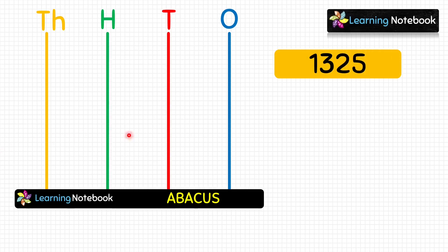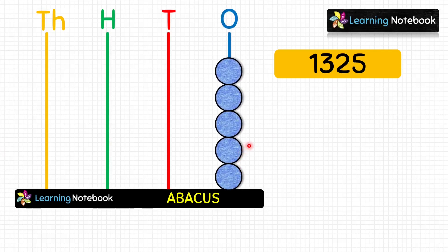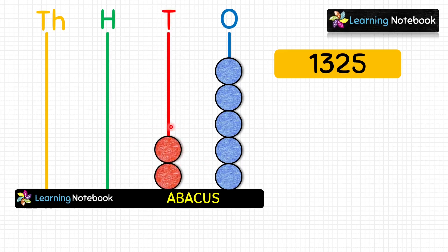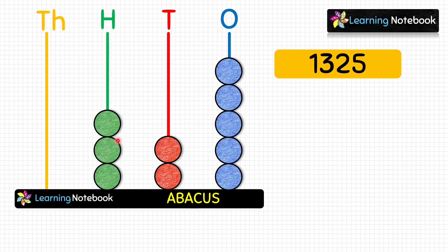The digit at ones place is 5, so let's place five blue coins at the ones spike. Next we have 2 at tens place, so let's place two red coins at the tens spike. Then there is 3 at hundreds place, so we place three green coins at the hundreds spike. Finally, the digit at thousands place is 1, so we place one orange coin at the thousands spike. In this way we have represented 1325 on the abacus.